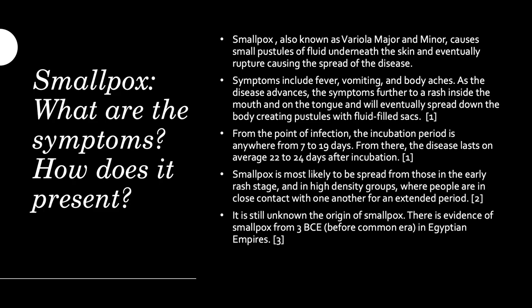From what we know about smallpox now, there are still a few mysteries, such as where it came from. We are still searching for the origin of smallpox itself, but there is evidence that it dates back to at least 3 BCE — before Common Era. It was found in the Egyptian empires, and we have seen evidence showing it has been in Asia, China, and Europe through many years. At this time, we do not know the origin of it or how it started, though we have gained a lot of information.